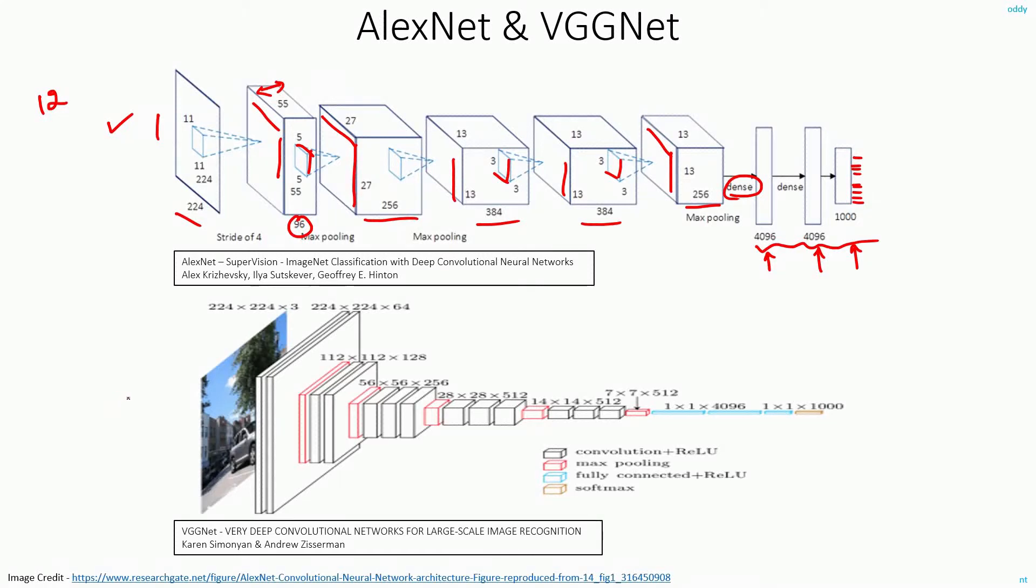And this is another network that is very easy to understand called VGGNet. Here you again have the same sized input. You can see 224 by 224 by 3 here. What does this 3 indicate? It is the 3 channels of your image RGB.